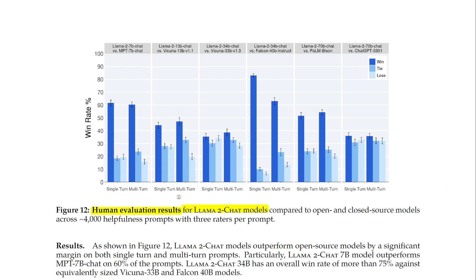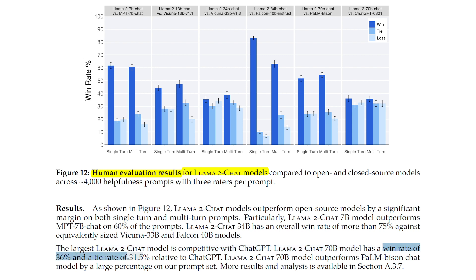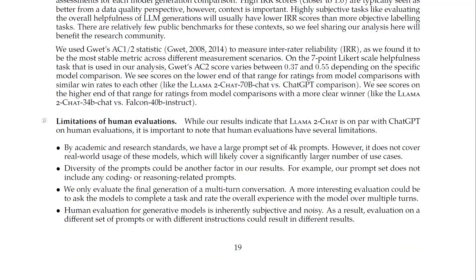The largest LLAMA2 Chat model is competitive with ChatGPT. The LLAMA2 Chat 70B model has a win rate of 36% and a tie rate of 31.5% relative to ChatGPT. It is important to note that human evaluations have several limitations, such as lack of prompt diversity and not covering real-world usage of these models.